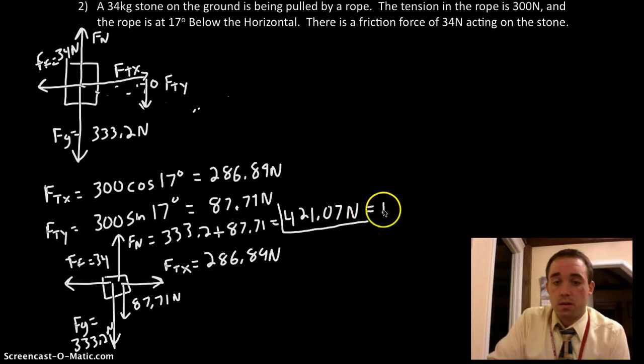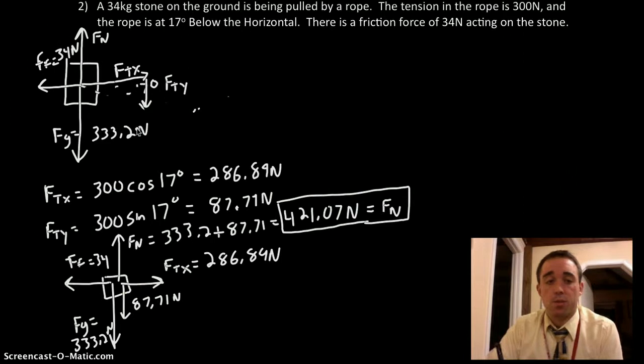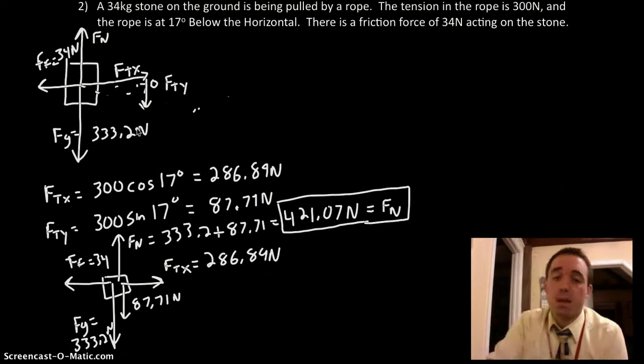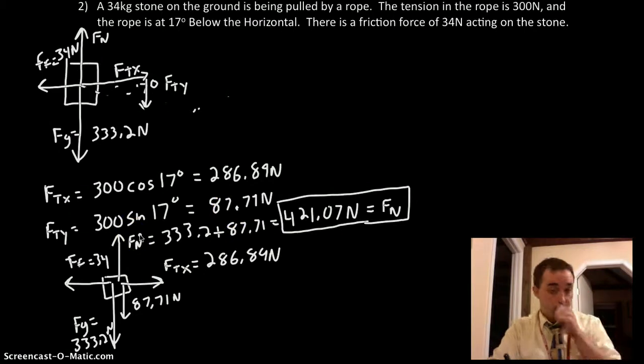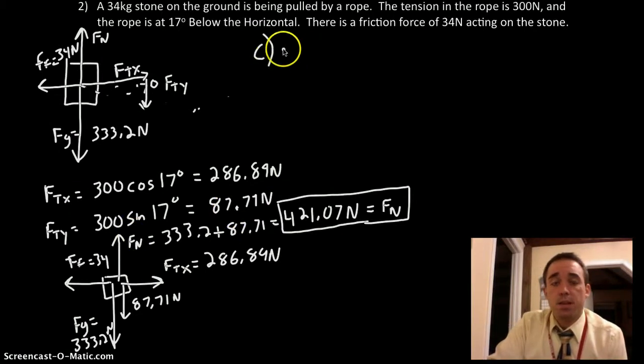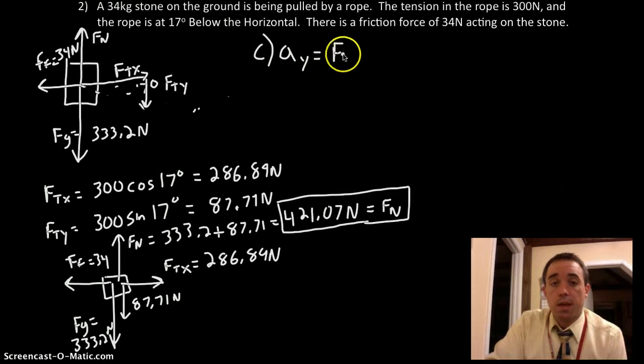Our picture this time is that we have a block, and instead of it being 34 kilograms, which is 34 times 9.8, 333.2 newtons, which would be our Fg. Instead of it being pulled upwards and to the right, so like that,